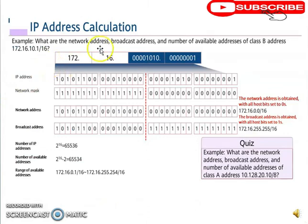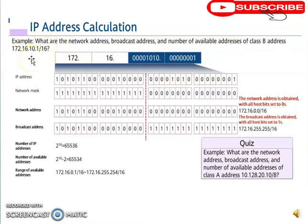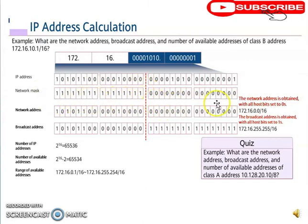Now let's do an IP address calculation. Given an IP address with /16, we find its default subnet mask: 255.255.0.0, meaning the first 16 bits are the network and the last 16 bits are the host. Setting all host bits to zero gives the network address: 172.16.0.0/16.